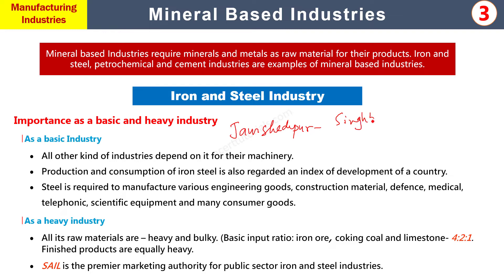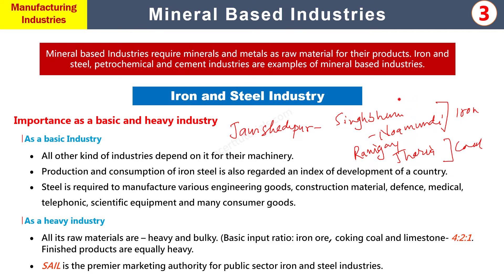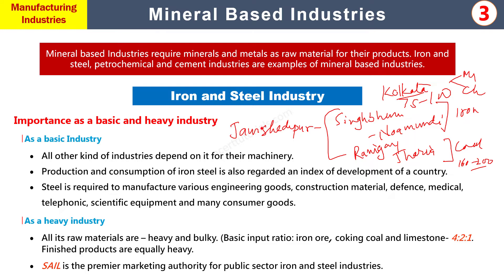Jamshedpur کی مثال لیں تو Singhbhoom district میں Noamundi کی mines سے iron ore ملتا ہے اور Jharia mines سے coking coal کی supply ملتی ہے۔ یہ دونوں لگ بھگ 75 سے 100 کلومیٹر کی دوری پر ہیں۔ Kolkata میں port supply مل جاتی ہے اور Mumbai اور Chennai سے بھی Jamshedpur accessible ہے، اس لیے government بھی support کرتی ہے۔